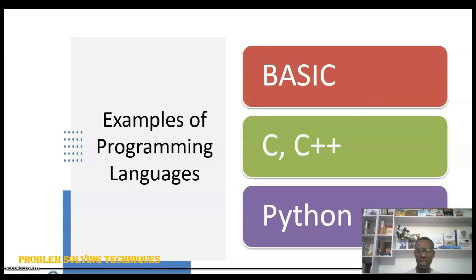For example, those languages could be BASIC language, could be C, could be C++, could be C#, it could be Java, it could be Python, it could be several of these languages.